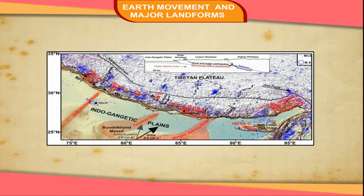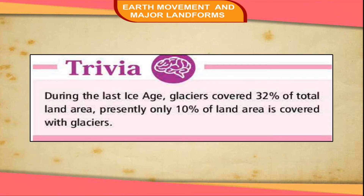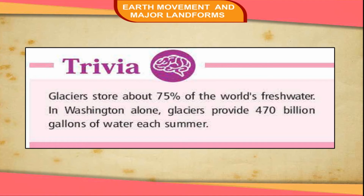Trivia. During the last ice age, glaciers covered 32% of total land area. Presently, only 10% of land area is covered with glaciers. Glaciers store about 75% of the world's freshwater.